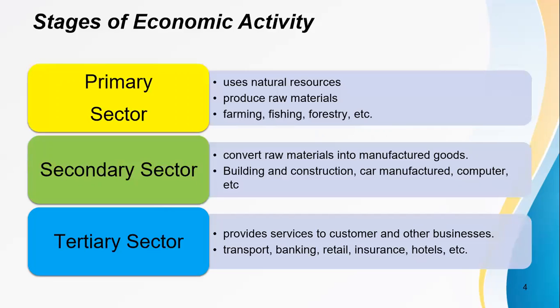Each sector has its own explanation. Primary sector usually uses natural resources and produces raw materials, such as farming, fishing, and forestry. Secondary sector converts raw materials into manufactured goods, such as building and construction, car manufacture, and computers. The tertiary sector provides services to customers and other businesses, such as transport, banking, retail, insurance, and hotels.